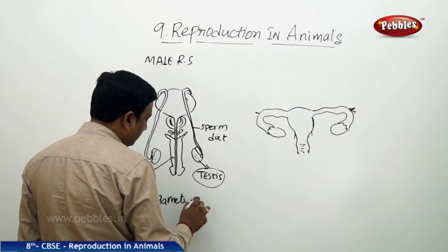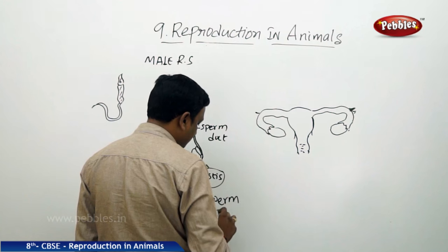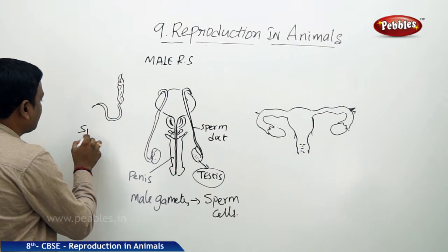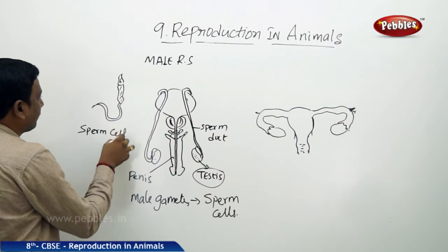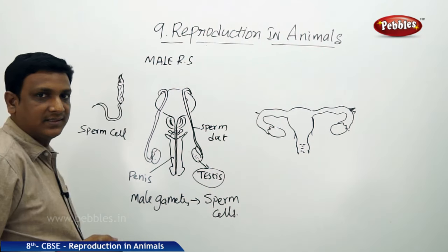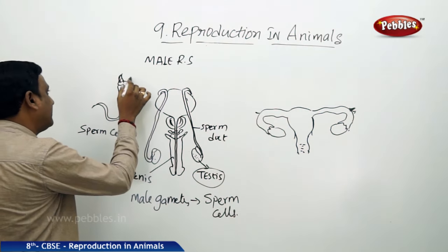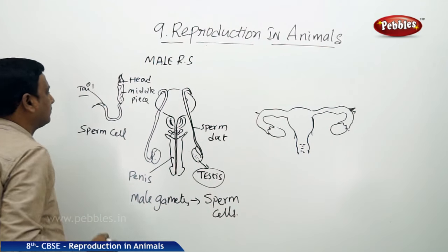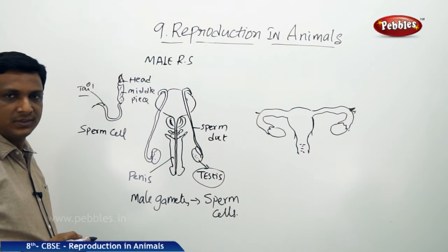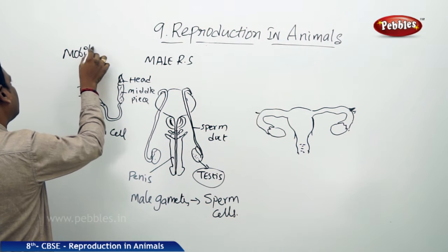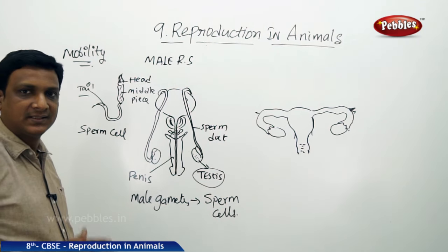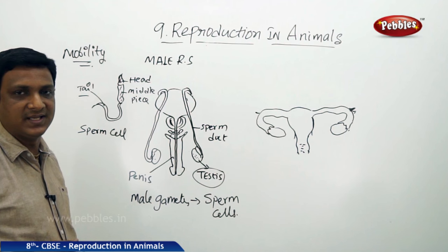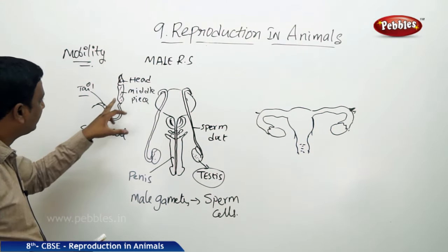Millions of sperm cells are produced at a time. A sperm cell consists of a head, middle piece, and a tail. The tail helps the sperm to move — sperm cells have mobility. With the feature of mobility, sperm cells travel through the female reproductive system to finally reach the egg cell. So the tail of the sperm cell helps it move and reach the egg.